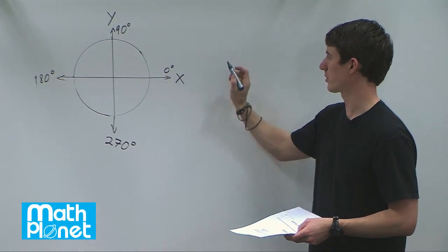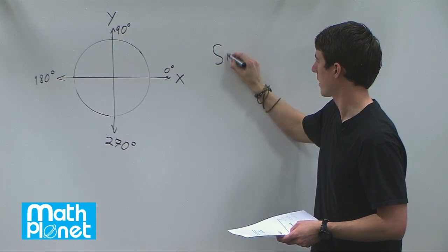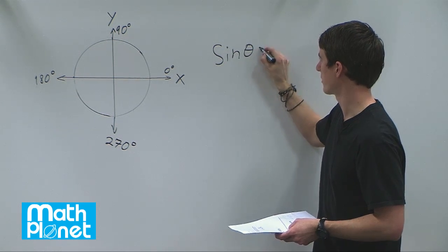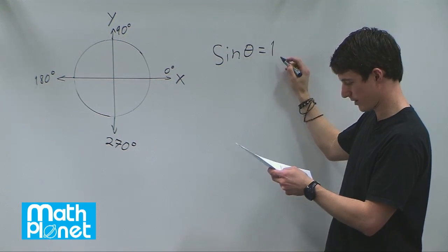Here we want to solve, using the unit circle, what sine of theta is if it's equal to one. So we want to solve for theta. Actually, it's negative one in this case.